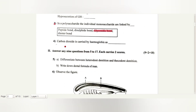Carbon dioxide is carried by hemoglobin as carbamino hemoglobin.